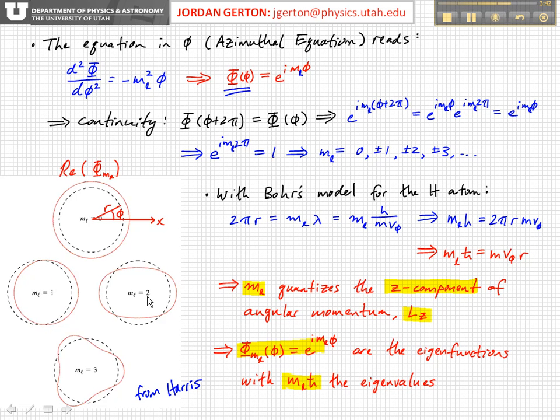For ML equals two, we have E to the I two phi, that corresponds to cosine. Remember, this is cosine ML phi plus I sine ML phi. We're just plotting the real part. So when ML is equal to two, then we have cosine of two phi.